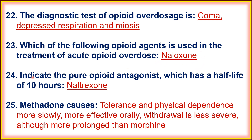Twenty-fourth, which is the pure opioid antagonist that has a half-life of 10 hours? The pure opioid antagonist is naltrexone, which has a 10-hour biological half-life.